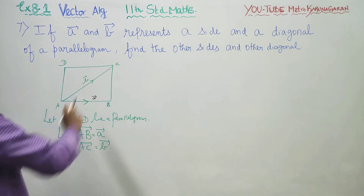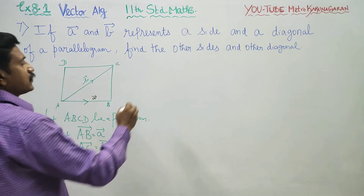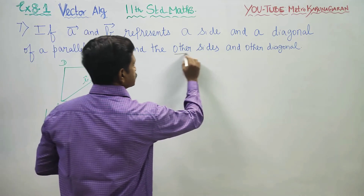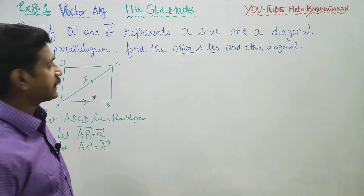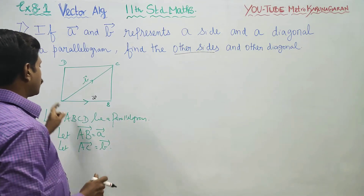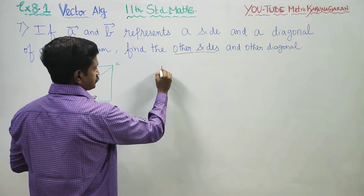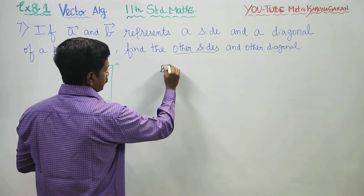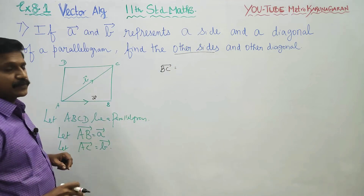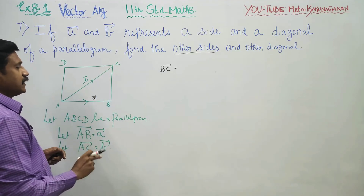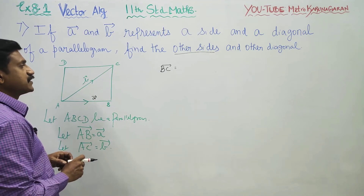This is my A vector and this is my B vector. What are you going to find? You have to find all the sides — another three sides as well as one diagonal. I am going to start with my BC vector. Using triangle law of addition.